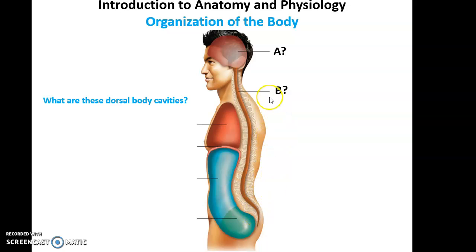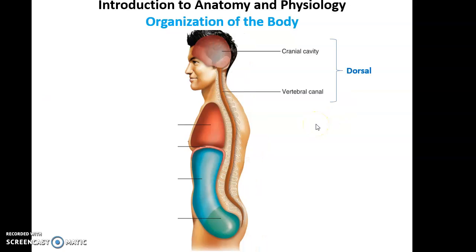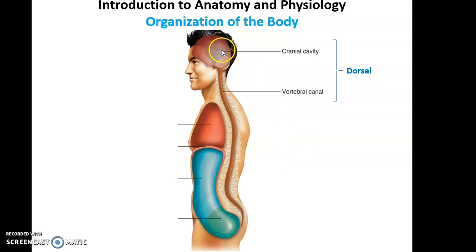Our dorsal, or back side, has two cavities located in it. They include the cranial cavity, where we find the brain, and the vertebral canal, where we find the spinal cord. So cranial cavity and vertebral canal are the two dorsal cavities, where we find the brain and spinal cord.